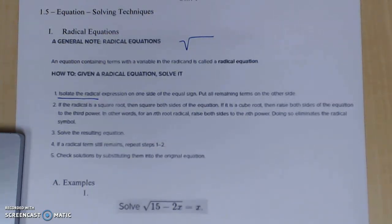Next step, if a radical is a square root, then you're going to square both sides. If it's a cube root, then raise both sides. In other words, for an nth root, raise both sides to the nth power. So here's when I kind of stop, pause, and review some things with you.